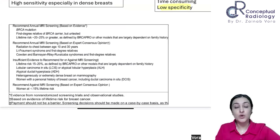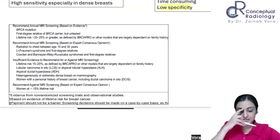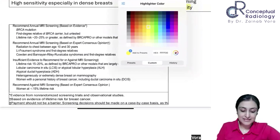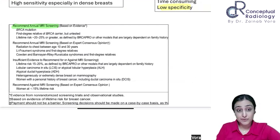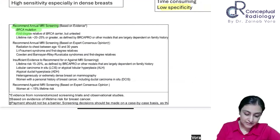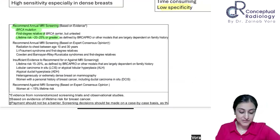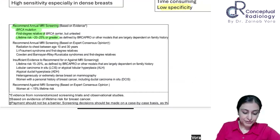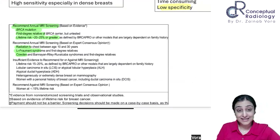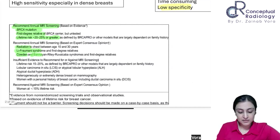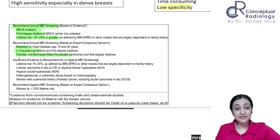These are the ACR indications. Annual MRI screening is recommended for high-risk patients: BRCA mutation carriers, first-degree relatives of a BRCA carrier, and those with lifetime risk of 20 to 25 percent or greater by any model. Radiation therapy to the chest is another indication, as well as Li-Fraumeni syndrome. Other syndromes with increased risk include Cowden syndrome — associated with breast, endometrium, and thyroid — and Bannayan-Riley-Ruvalcaba syndrome, which also has hamartomatous polyps like Cowden's syndrome.